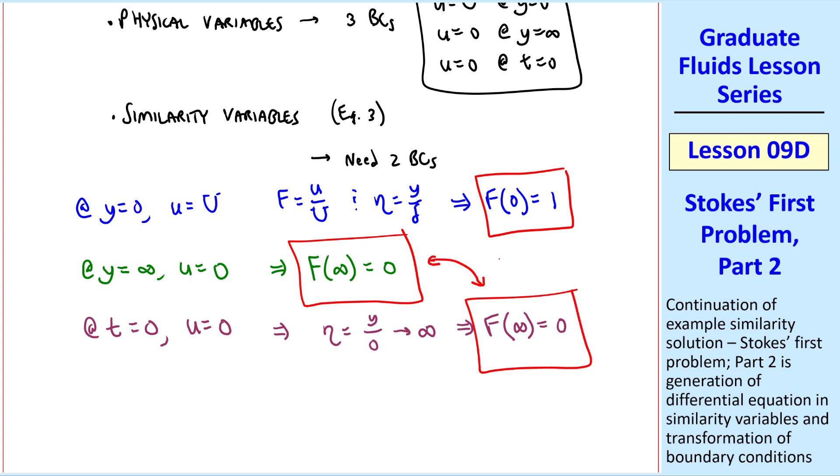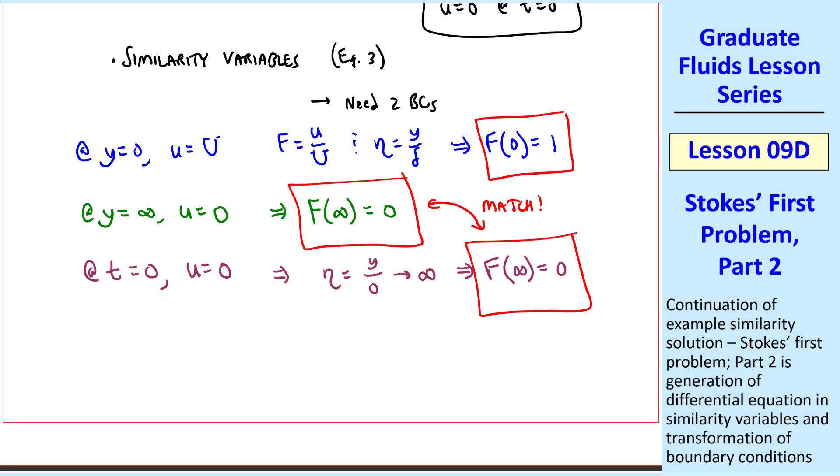And fortunately, these two boundary conditions match. Thus, since we reduced the number of independent variables by 1, and the boundary conditions went from 3 to 2, without any conflict, we've met all the conditions for similarity. So we have achieved similarity.